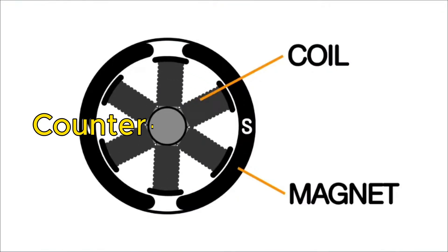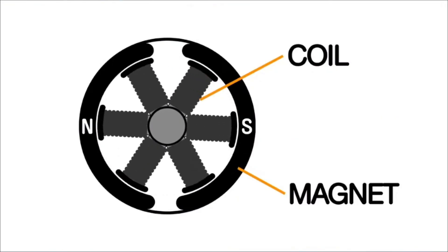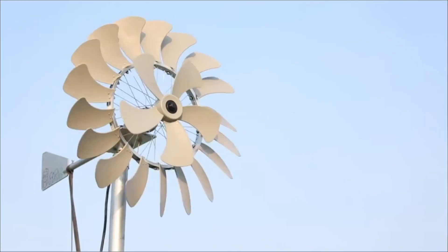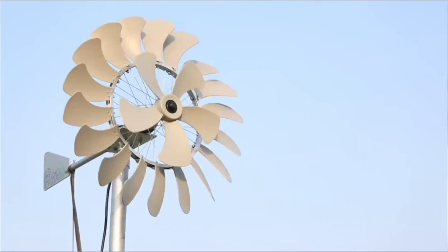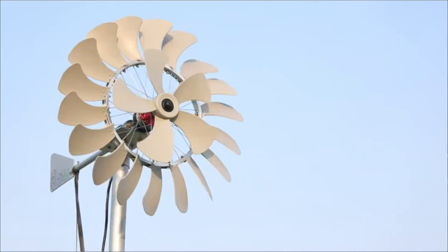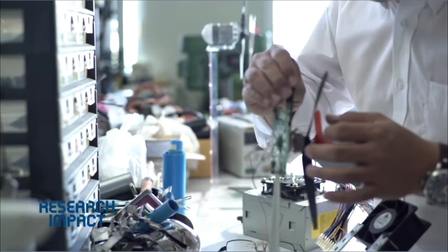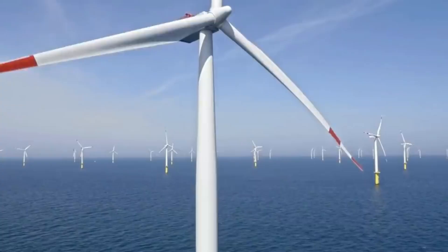The counter-rotating type rotor is a HAWT blade that has two sets of blades that rotate in opposite directions. It increases the efficiency and stability of the turbine, and has a medium TSR and a medium solidity.